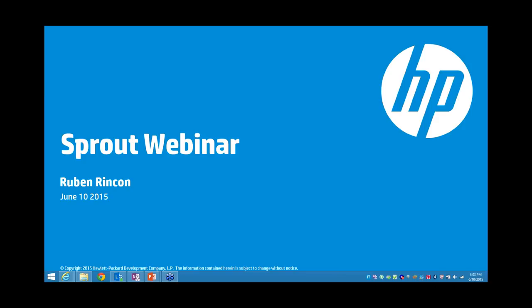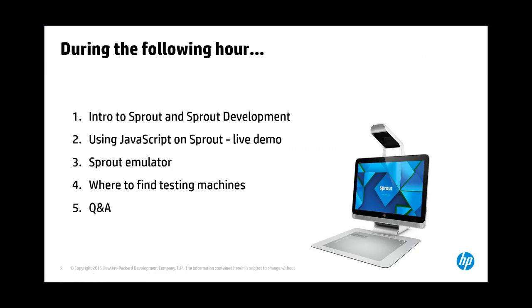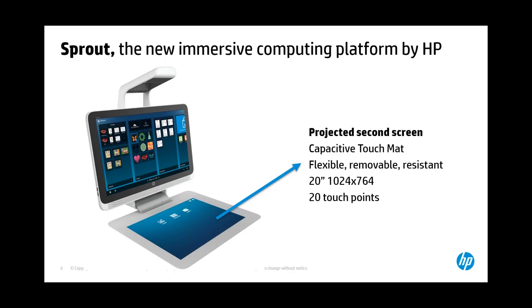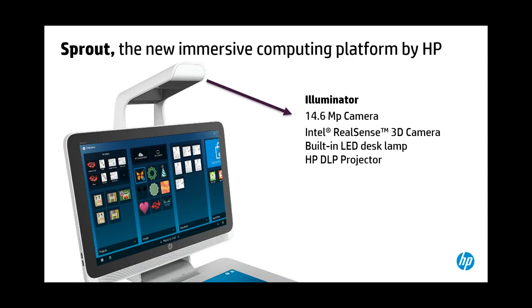For showing the applications, we will actually be showing live on the Sprout because it's the best way for you to understand how these APIs work. Here's what we're going to cover in the following hour: first, I'll give you a quick intro to Sprout and Sprout development, then my colleague Wei Seto will show you how to take advantage of JavaScript to create applications for Sprout with a live demo session. We'll also show you the Sprout emulator and some test machines, and finally we'll have a Q&A session with the platform team.